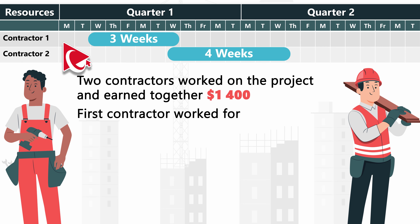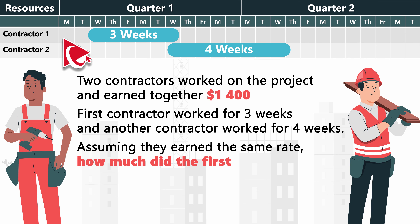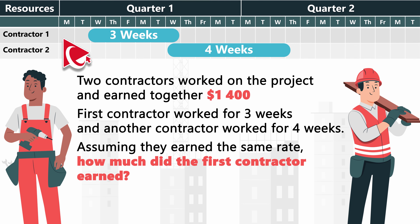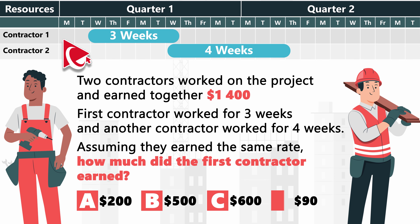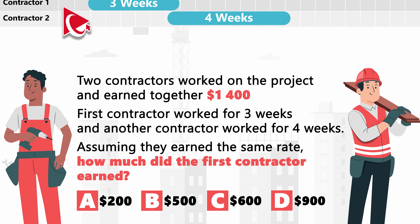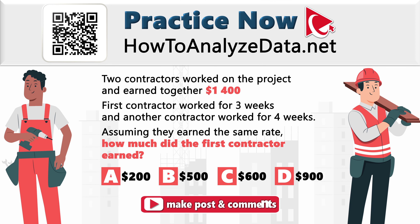One contractor worked for 3 weeks and another contractor worked for 4 weeks. Assuming they've earned the same rate, how much did the first contractor earn? You need to calculate and select the answer out of 4 possible choices: Choice A: $200, Choice B: $500, Choice C: $600, and last but not least, Choice D: $900. Embark on this challenge solo and when you've unraveled the mystery, post your answer in the comments. I will be there to share my feedback.